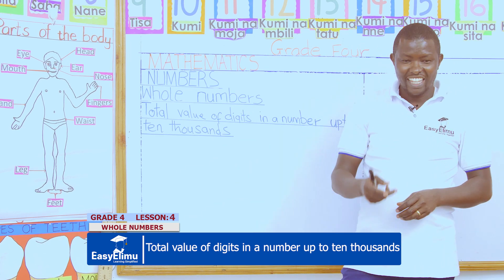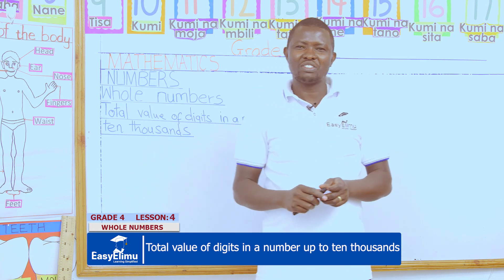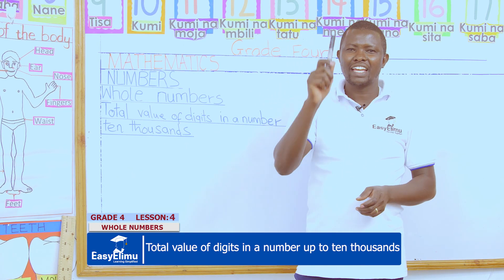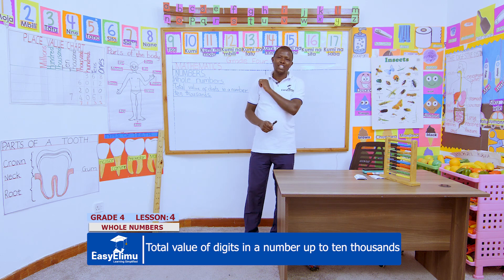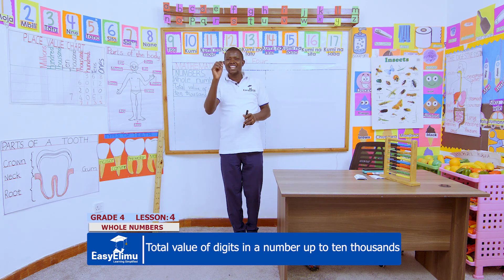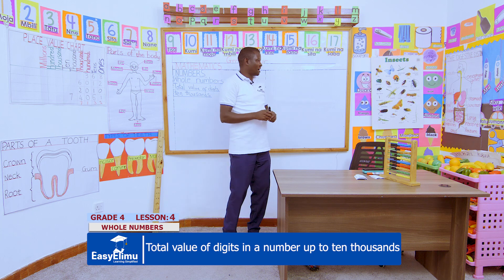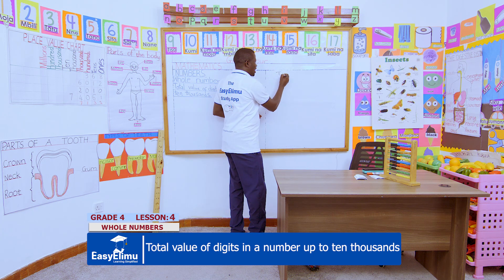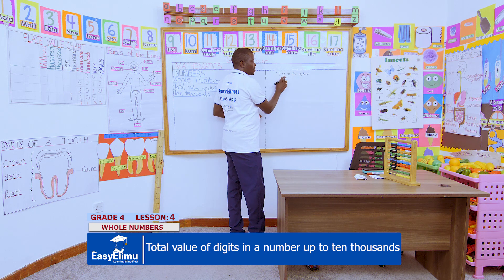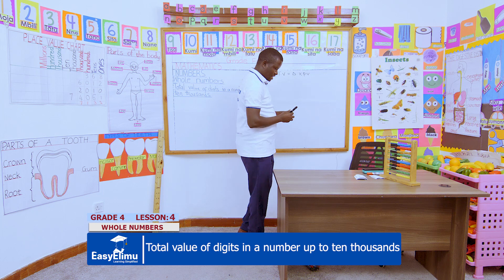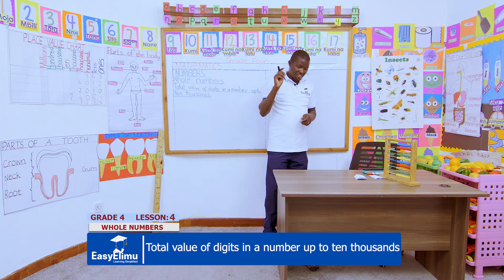That is correct. For us to reach a total value, we said we take the digit itself and multiply it by its place value. Total value equals digit itself multiplied by place value, and we get our total value.